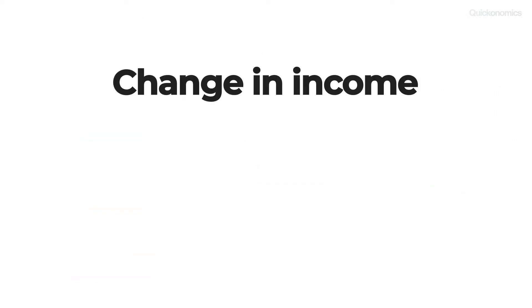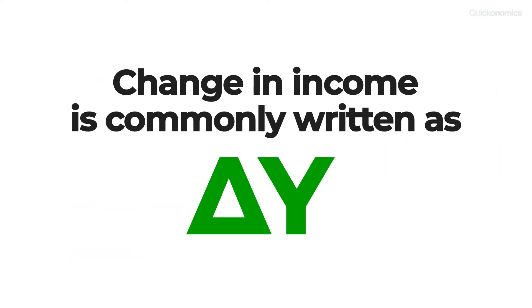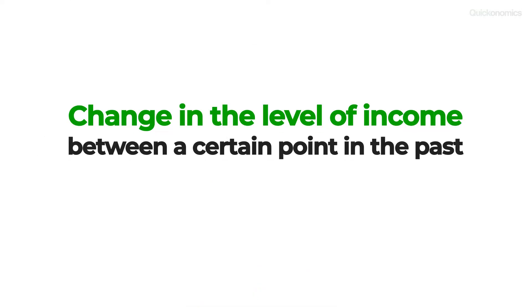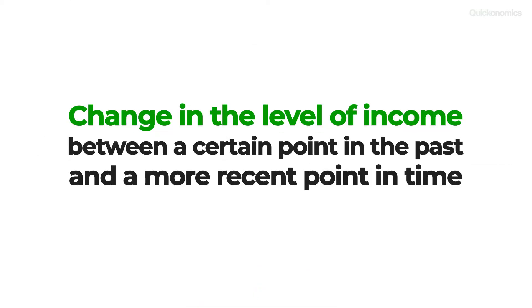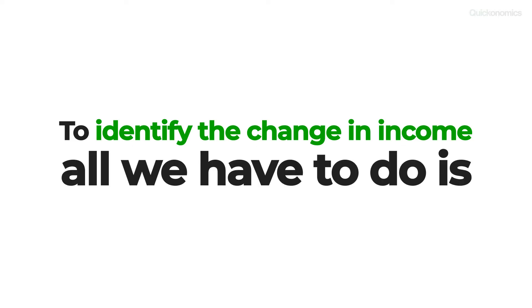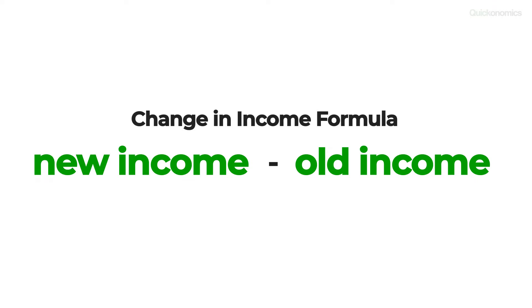Let's start with step one: identifying the change in income. The change in income is commonly written as delta Y. It describes the change in the level of income between a certain point in the past and a more recent point in time. To identify the change in income, all we have to do is subtract the old income from the new income.